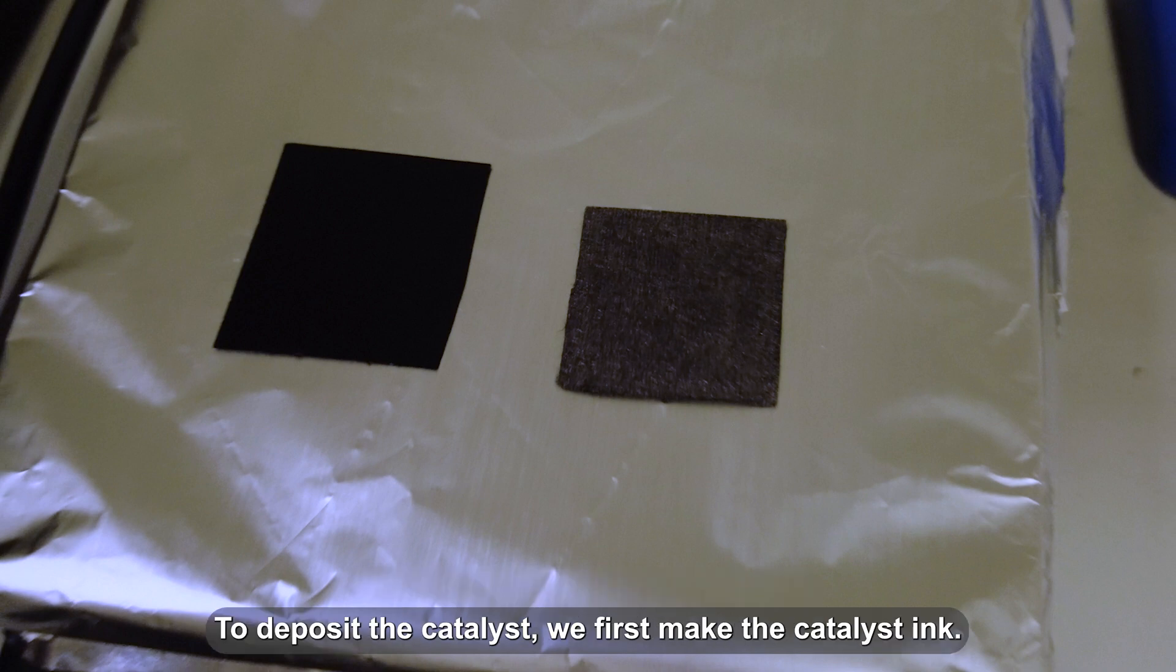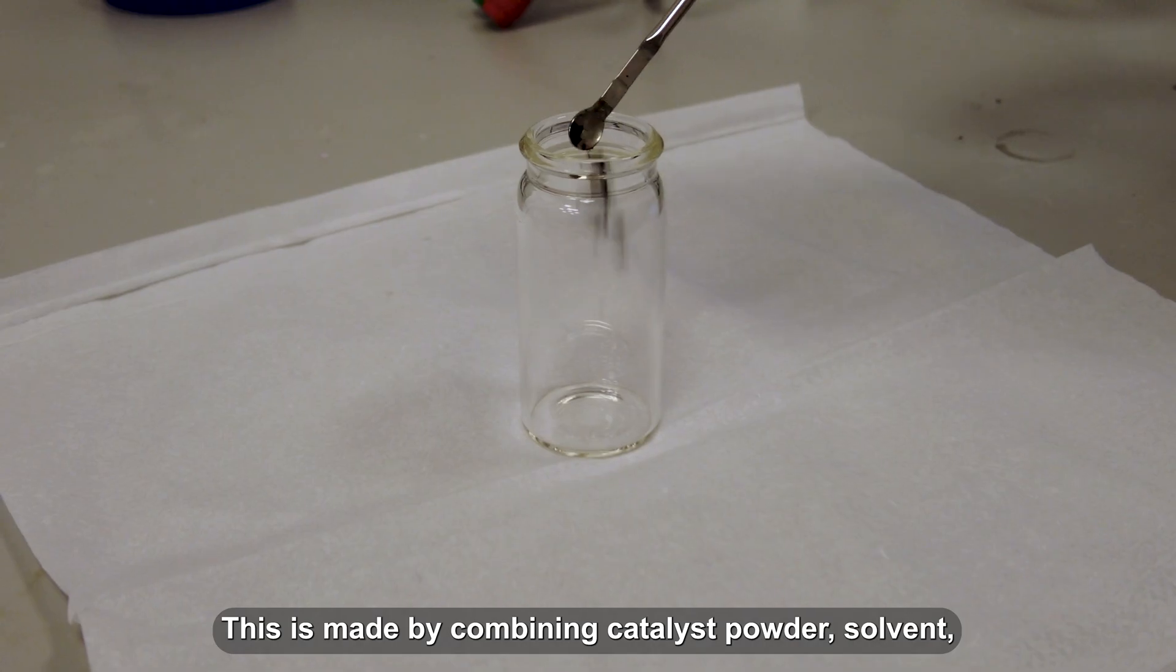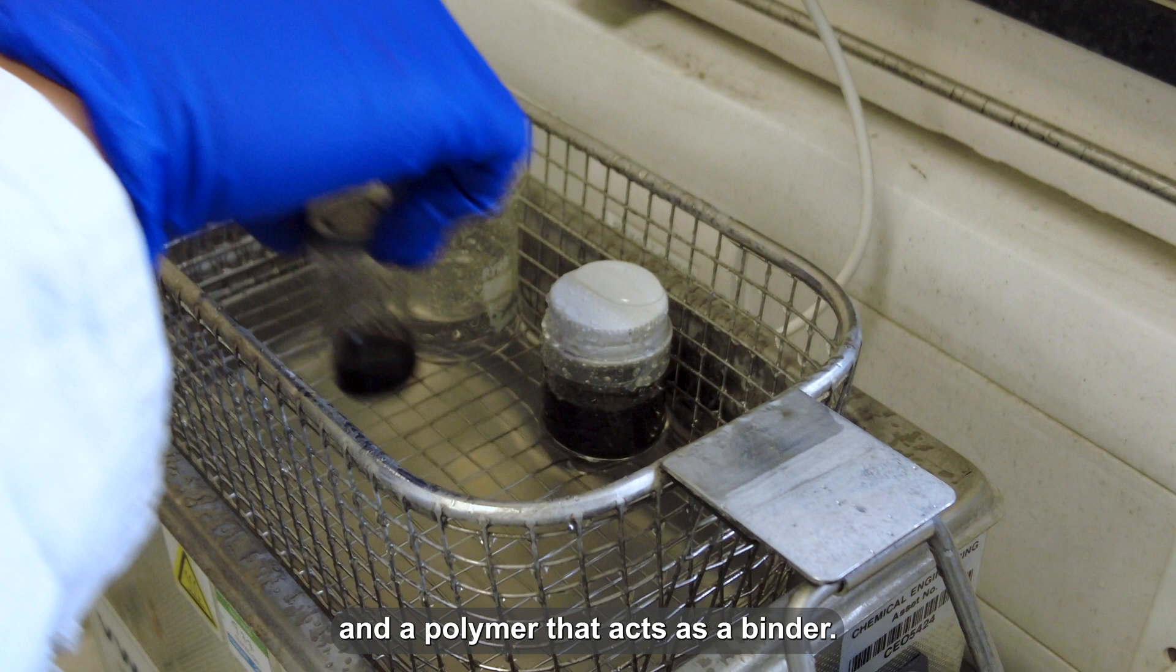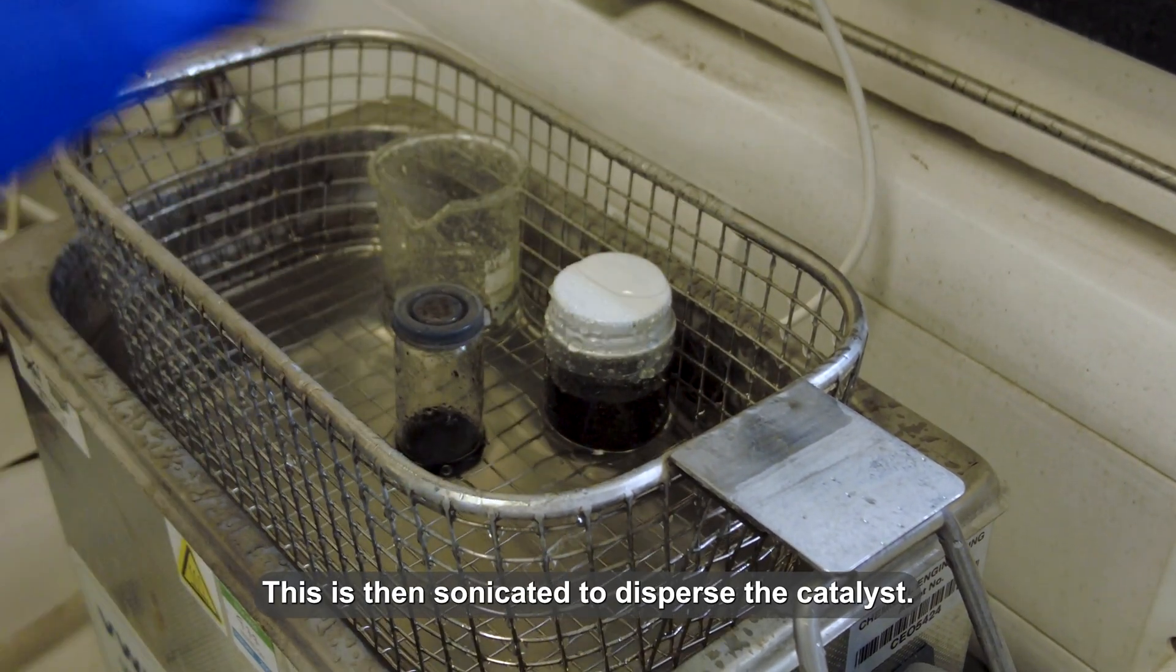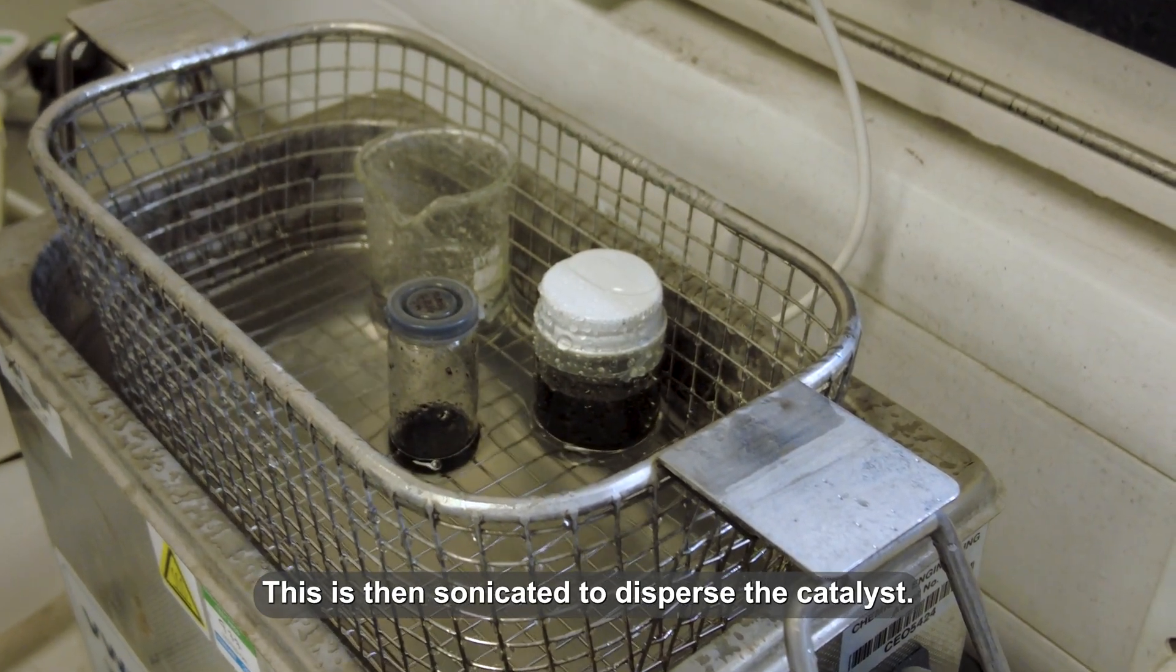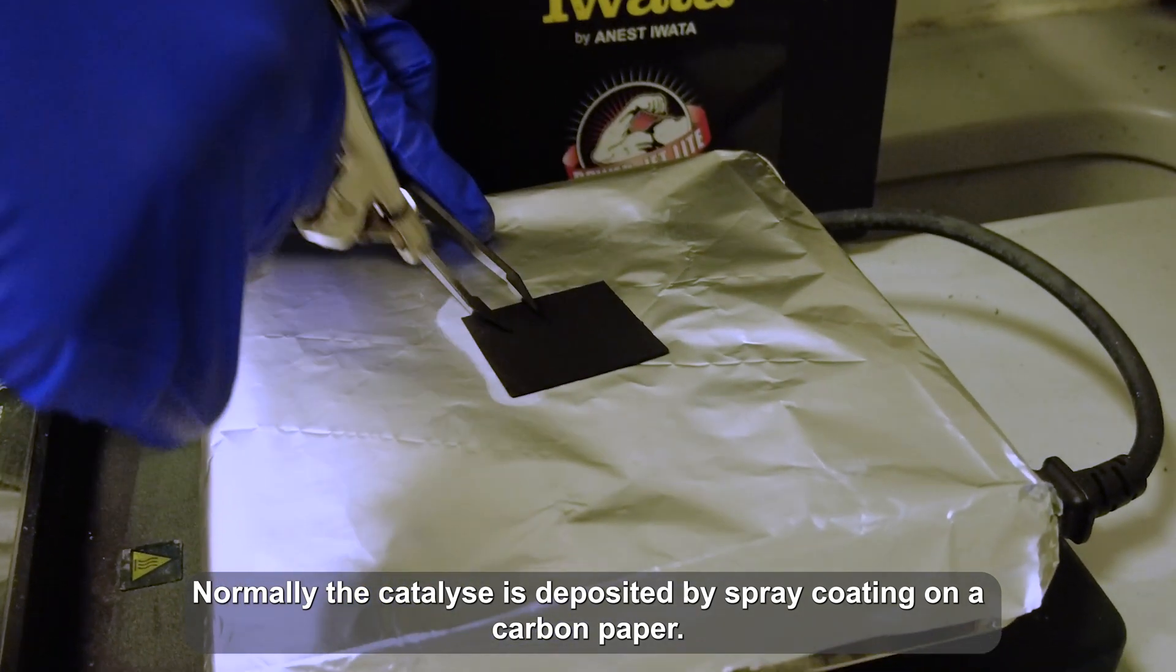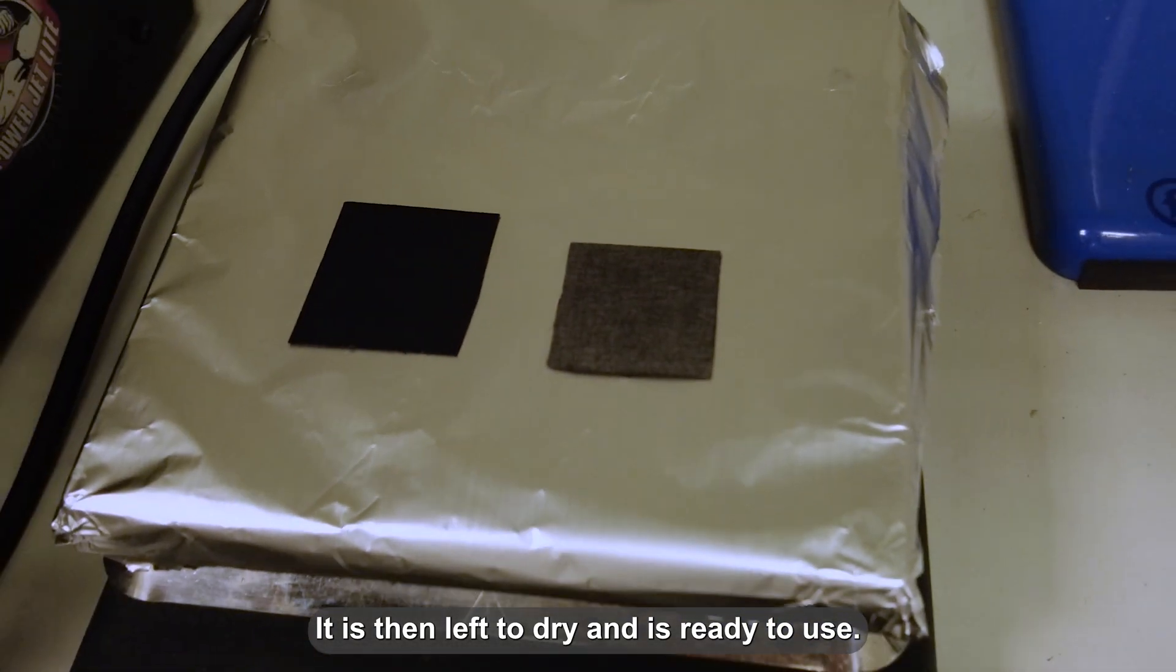To deposit the catalyst, we first make the catalyst ink. This is made by combining the catalyst powder, solvent, and a polymer that acts as a binder. This is then sonicated to disperse the catalyst. The catalyst is deposited by spray coating on carbon paper, left to dry, and is ready to use.